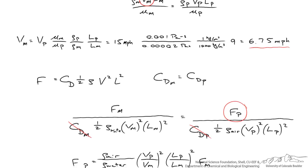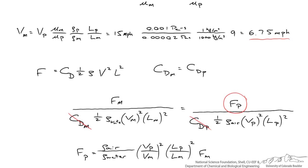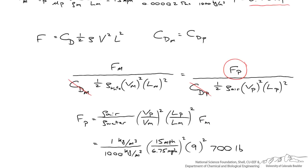To calculate the drag force on the prototype, we rearrange and need the ratio of the densities, the ratio of the two velocities, and the ratio of the length scales, multiplied by the drag force on the model. Plugging in the numbers, the actual drag on the prototype is 280 pounds. It may seem strange that something nine times bigger has less than half the drag force of the model, but consider that the blimp is flowing through air — a much less dense fluid, about a thousand times less dense than water. So even though it's nine times bigger, the drag force is actually less.